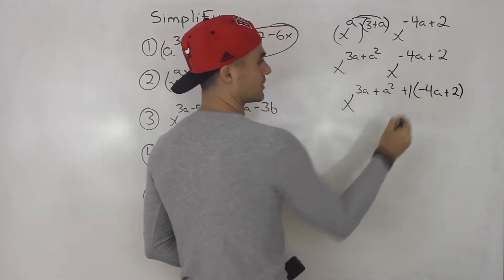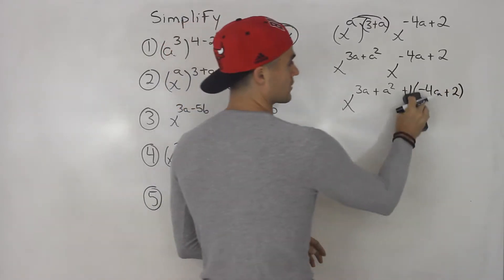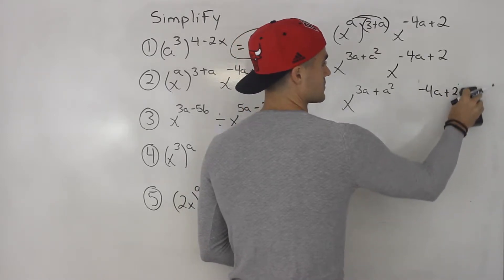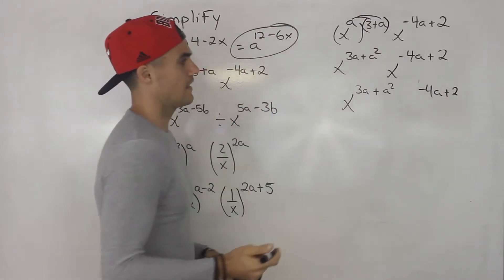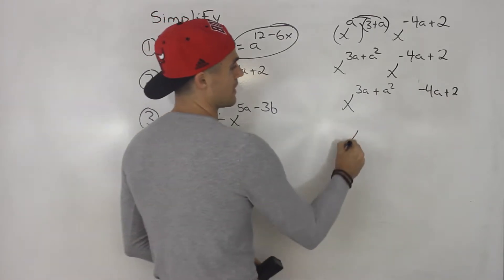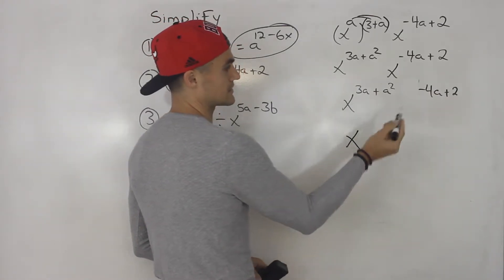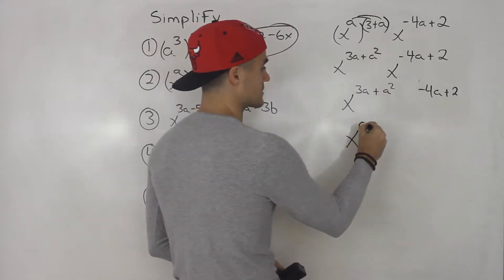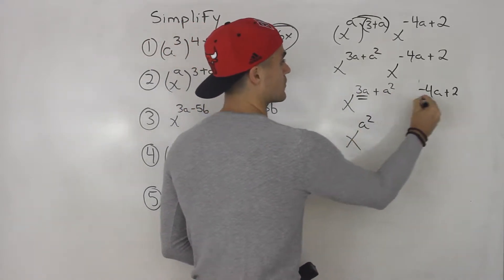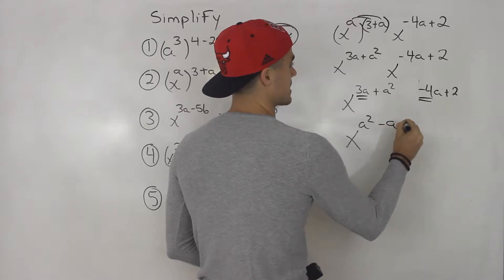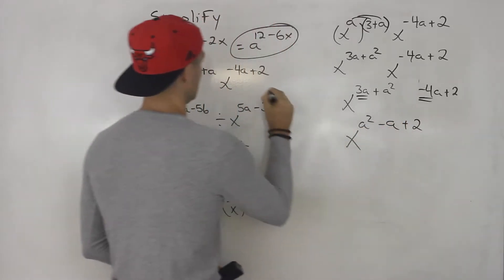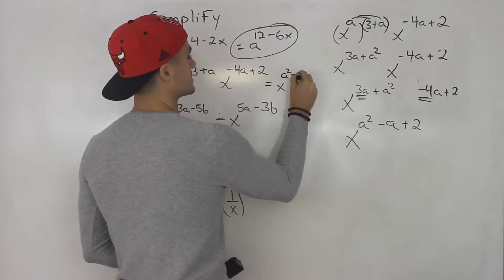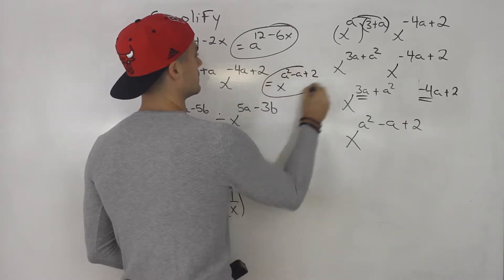Since we are multiplying two exponents with the same base, we can add the exponents. So we rewrite this as x to the three a plus a squared plus negative four a plus two. Because there's just a plus one in front of the brackets, we can drop the brackets: minus four a, plus two. Collecting like terms: a squared has no like term, three a minus four a gives minus a, plus two. So this ends up being x to the power of a squared minus a plus two.